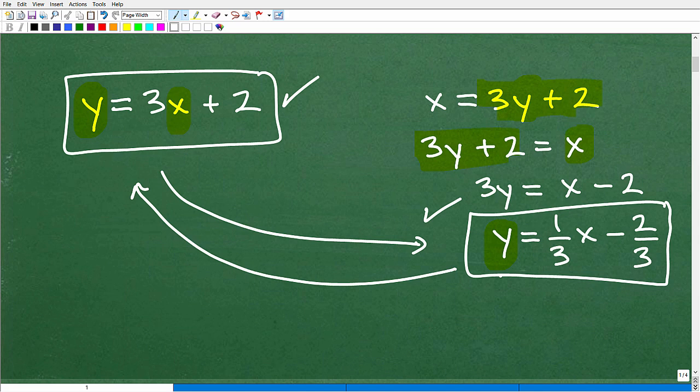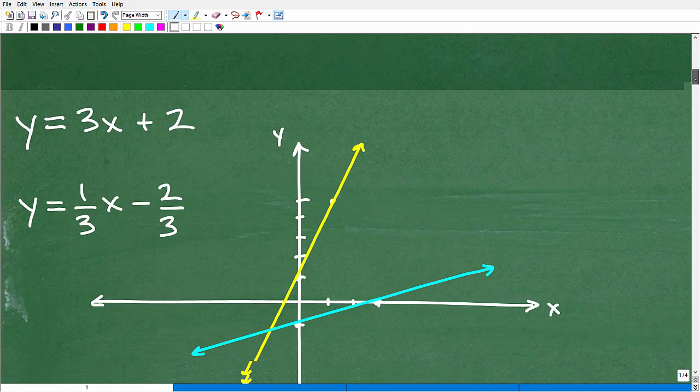If you have graphing paper, that's awesome. But if not, just draw some nice, very nice, neat XY plane. And then precisely graph this again. If you're sloppy with this, you're not going to be able to see the property that I'm trying to discuss. Okay. So let me show you my graph and let's go ahead and plot both of these lines.